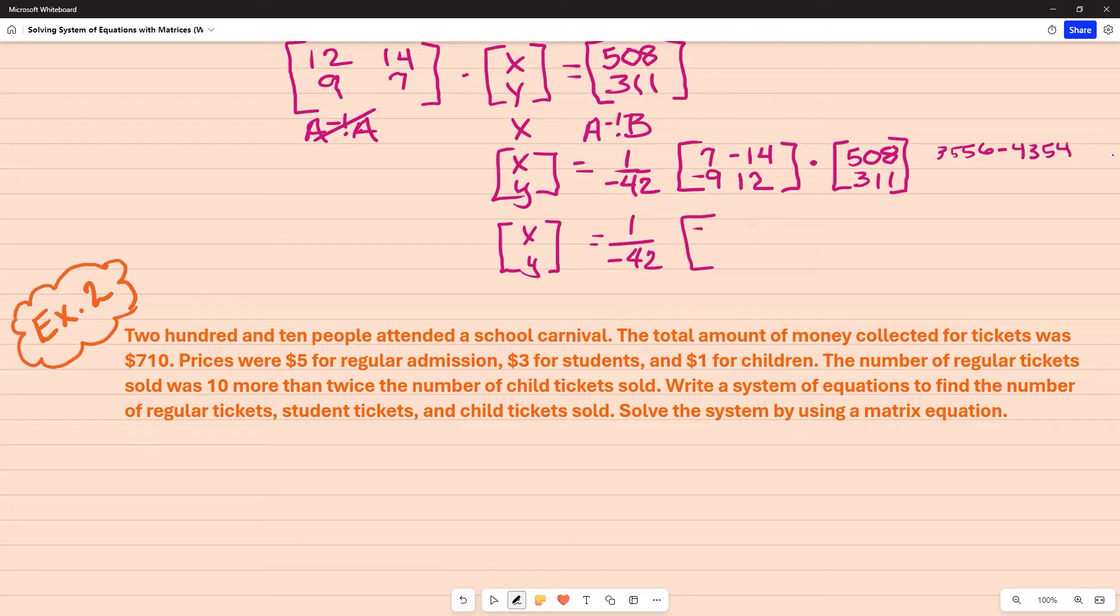So that's going to leave me an answer with negative 798. Then I'm going to go on to my second row in that same column, and that gives me negative 4,572, and then when I multiply 12 times 311, I'm going to get 3,732. When I combine that, I end up with negative 840.